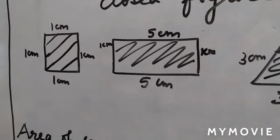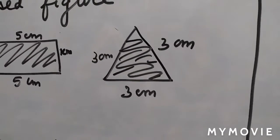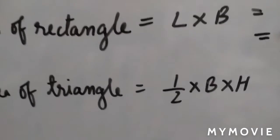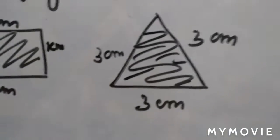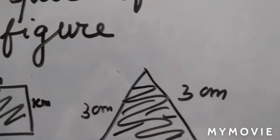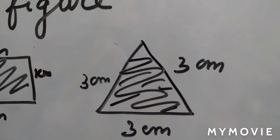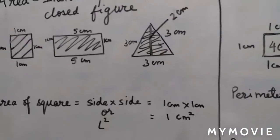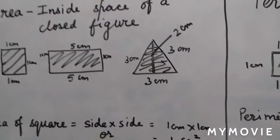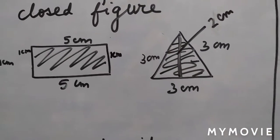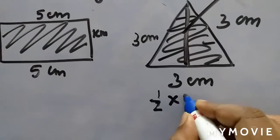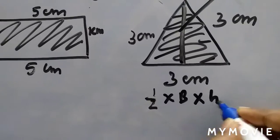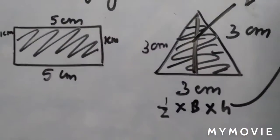Now when we find the area of triangle, the formula is different. It is half into base into height. To calculate the area of triangle, we need half into base into height. Height is how tall it is, that is your height.